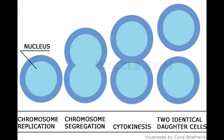Problems may occur in any of the steps in binary fission, resulting in abnormalities in the daughter cells. Some simple organisms, like chlamydia and paramecia, reproduce by both sexual and asexual means, depending upon the prevailing conditions. Thus, they have an advantage over simpler unicellular organisms in terms of generating more daughter cells and increasing their population.